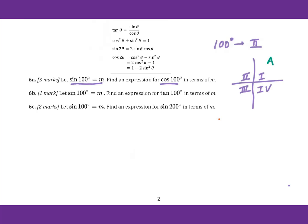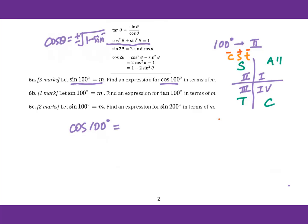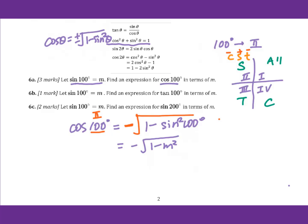Using 'all students take calculus,' in the second quadrant sine is positive and cosine is negative, tangent is negative. Therefore, for cosine 100°, using the formula cosine theta equals plus or minus square root of 1 minus sine squared theta, since 100° is in the second quadrant, cosine is negative. So cosine 100° equals negative square root of 1 minus sine squared 100°, which gives negative square root of 1 minus m squared.